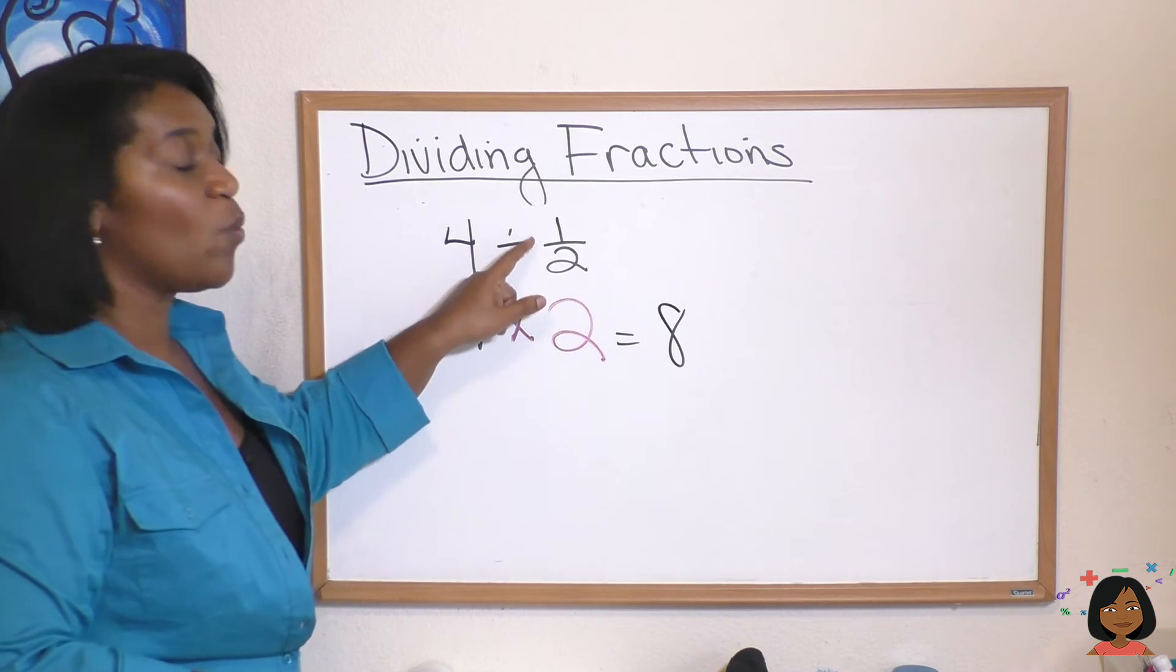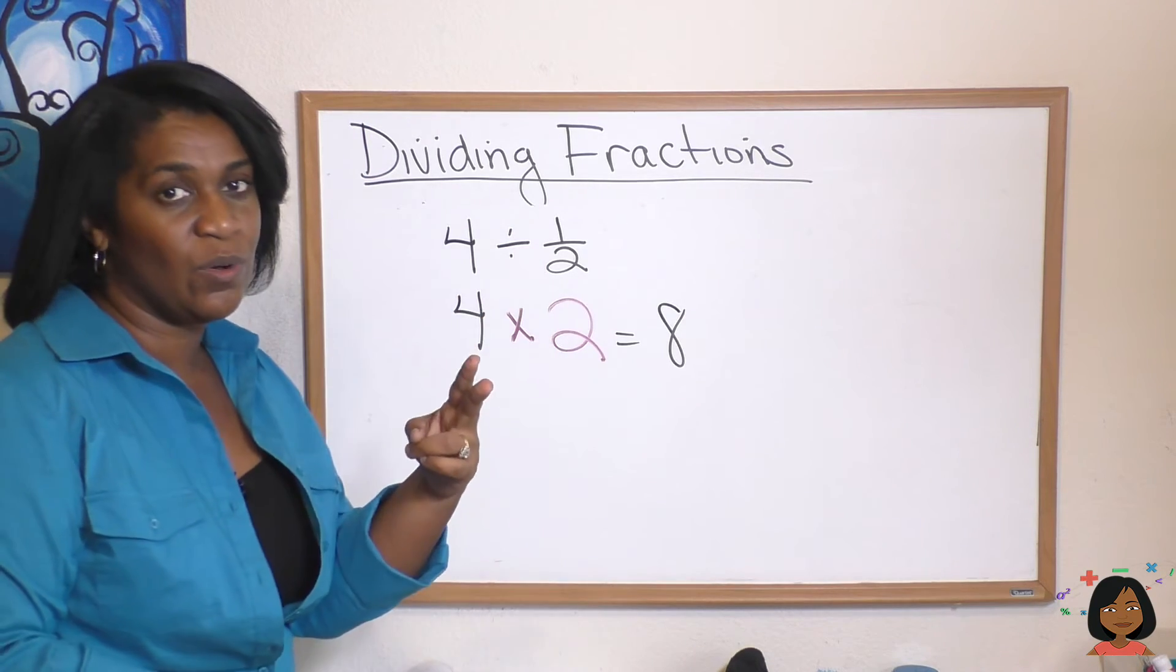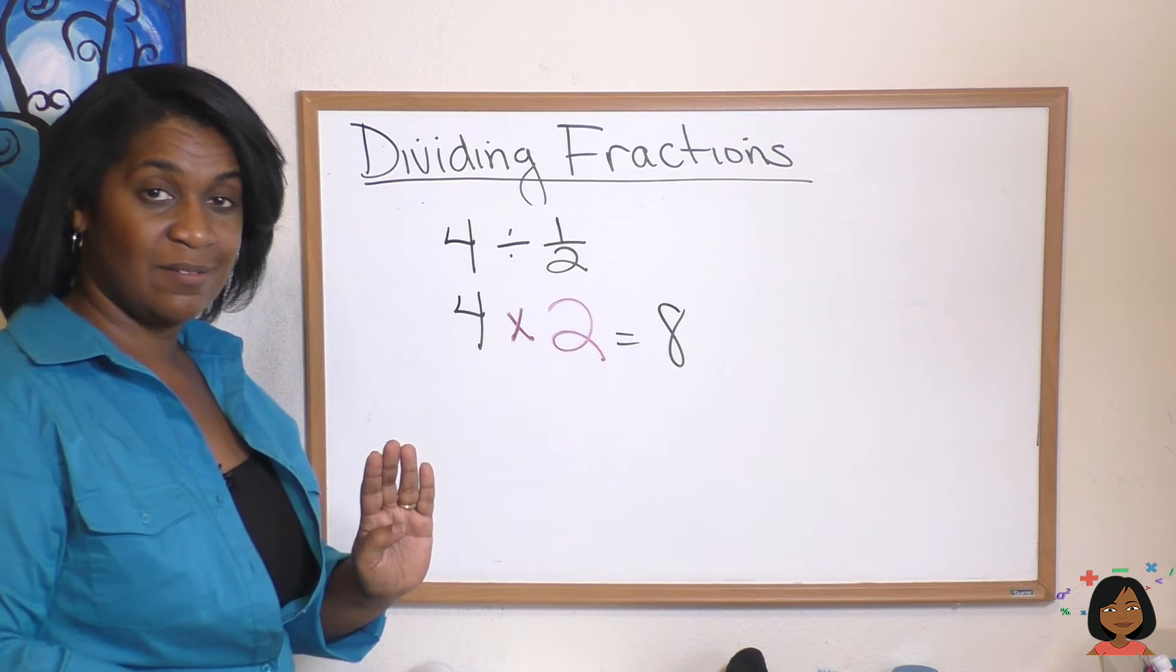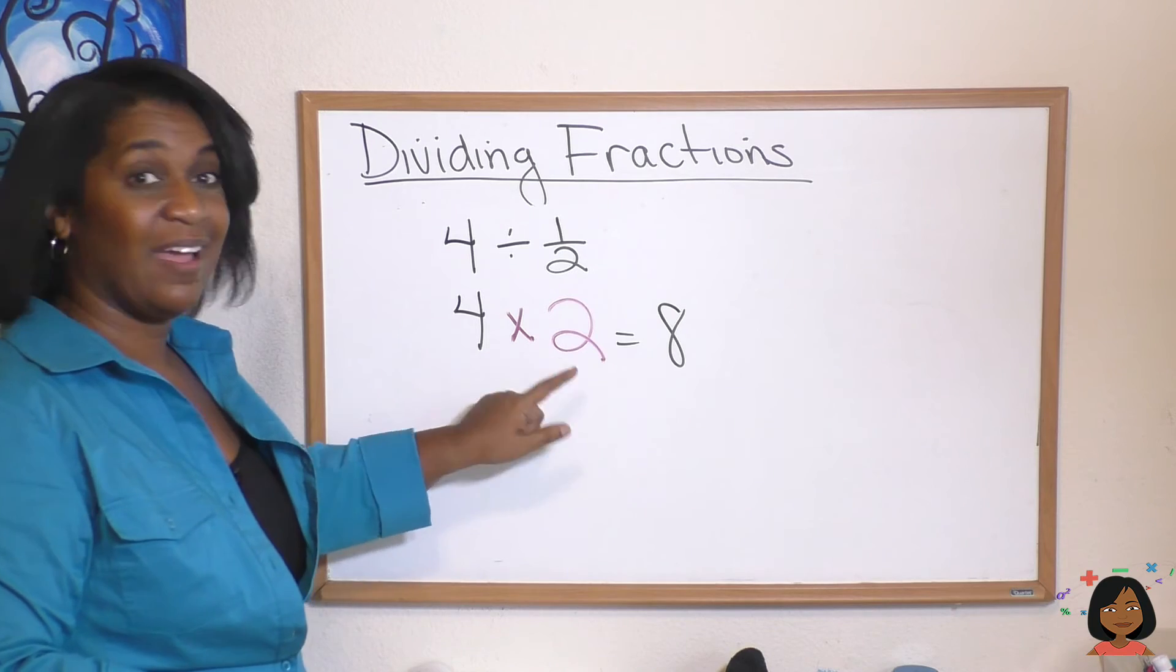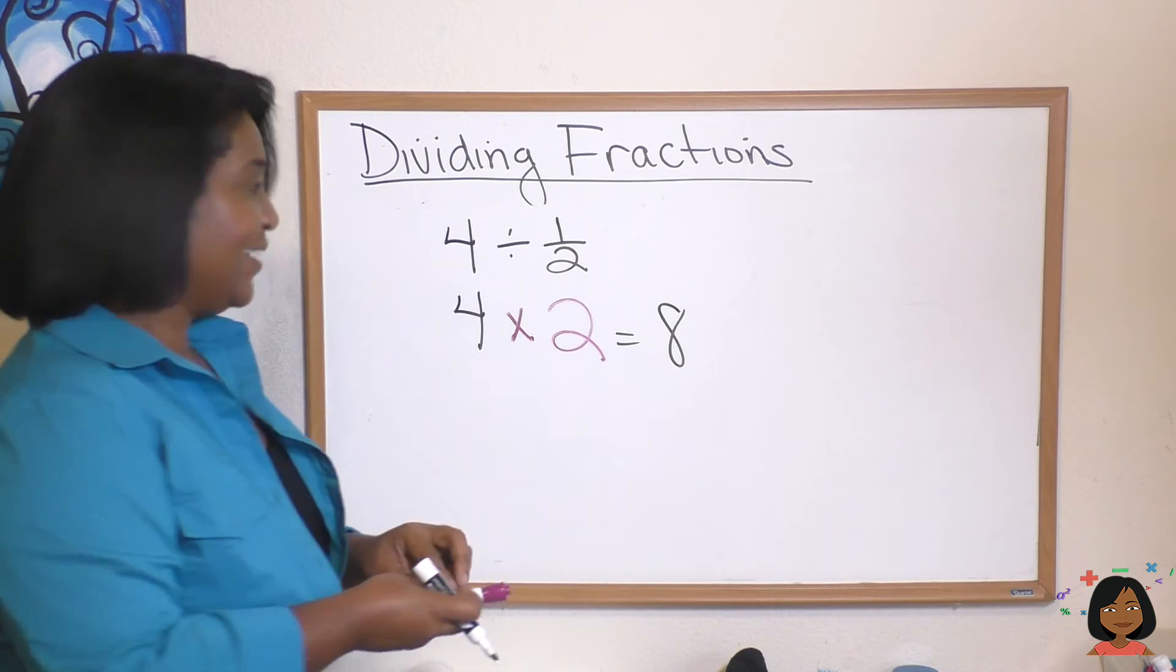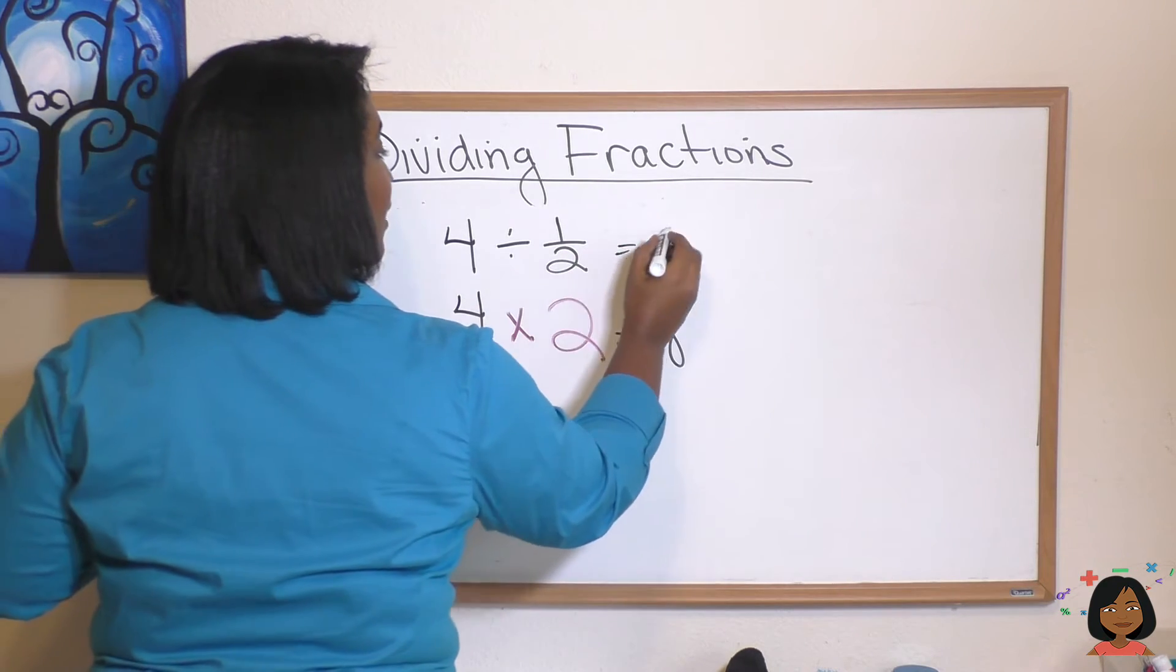Now think about it. When we had the one-half we knew there were two one-halves in one. So in four it would be four times two and we would get eight. Ah now it's coming together.